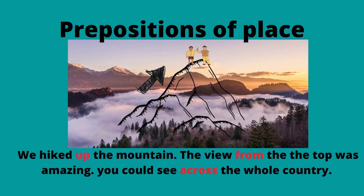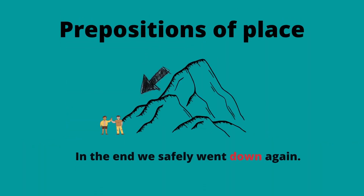Then you're probably going to talk about how great the view was, so you could use more prepositions like 'from' — 'the view from the top was amazing' — or 'across' — 'you could see across the whole country.' But in the end, unless you plan on staying on the mountain forever, you will eventually use the preposition 'down': 'In the end, we safely went down again.'